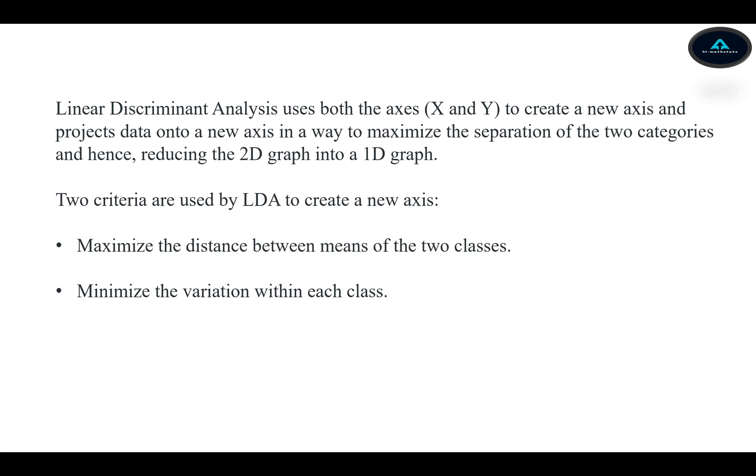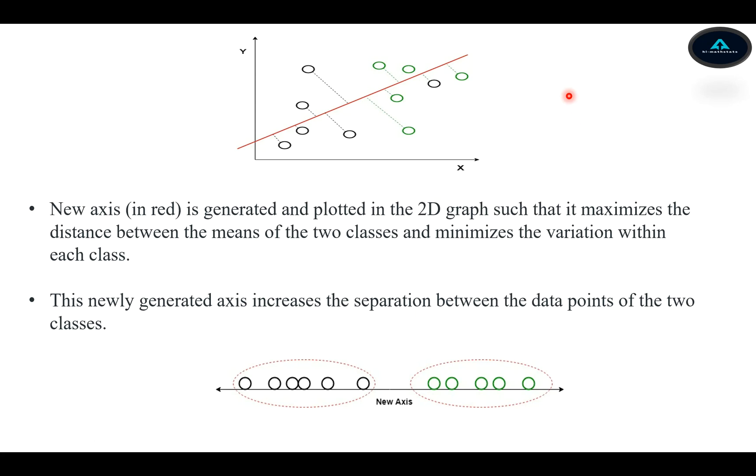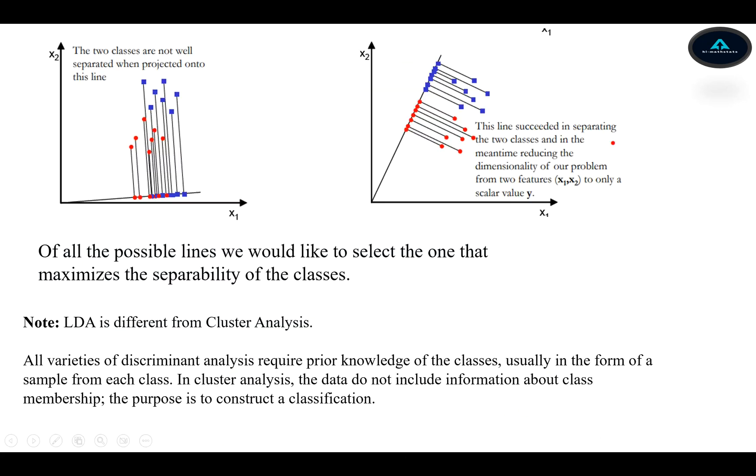Let us look into this new axis in red. This new axis is generated and plotted in a two-dimensional graph. We want it to maximize the distance between the means of the two classes; however, it should minimize the variation within each class. This newly generated axis will increase the separation between the data points of the two classes.